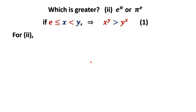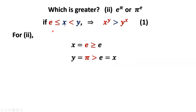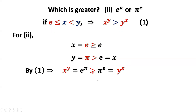For the second question, similarly, we define x equals e, which is bigger than or equal to e, and y equals pi, which is bigger than e. Certainly y is bigger than x, so this condition is satisfied. Replacing x by e and y by pi, we get: e to the power of pi equals x to the power of y, and pi to the power of e equals y to the power of x. Therefore, e to the power of pi is bigger than pi to the power of e. We have solved the second question.